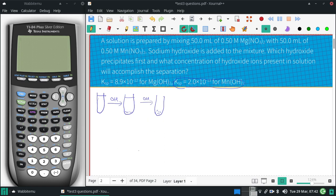And it will start precipitating if we find out the concentration of OH needed. So I'm going to figure out the KSP for the manganese hydroxide, and we're going to plug some numbers in here and solve for the OH concentration. So 2.0 times 10 to the negative 13 is the KSP.